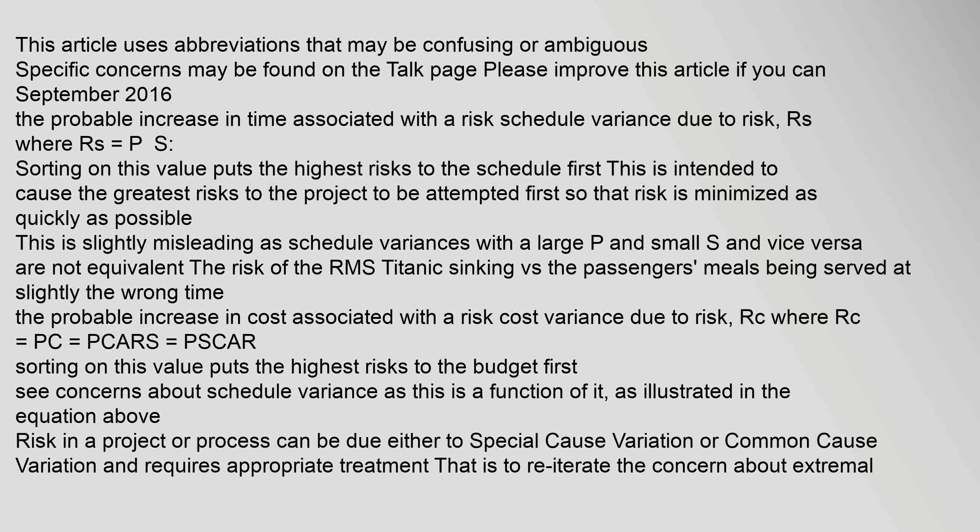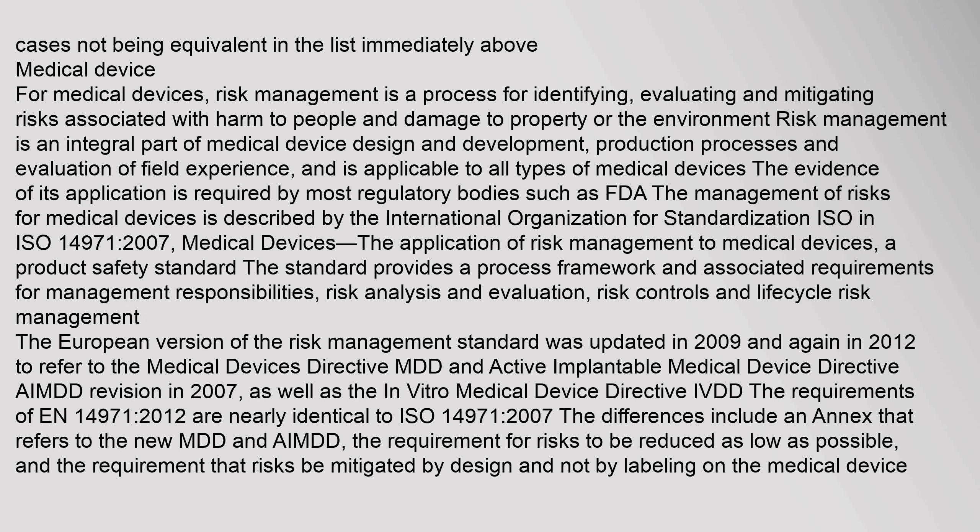The probable increase in time associated with a risk (schedule variance due to risk, rs) where rs = ps, sorting on this value puts the highest risks to the schedule first. The probable increase in cost associated with a risk (cost variance due to risk, rc) where rc = pc = pcar, s = pscar. Risk in a project or process can be due either to special cause variation or common cause variation and requires appropriate treatment.